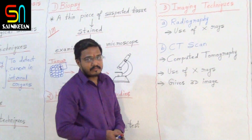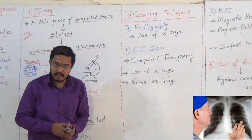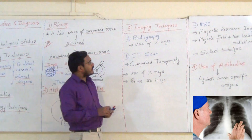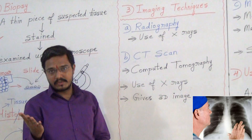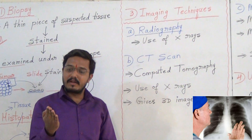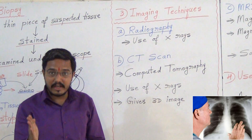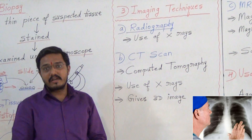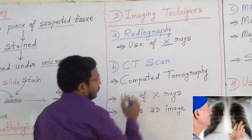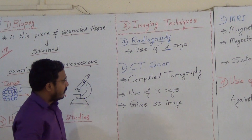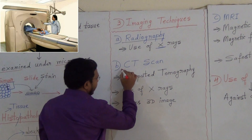Now come to the third one — imaging techniques. This is widely used nowadays. Imaging techniques are used to detect the cancer of internal organs. The first imaging technique is radiography. Radiography means X-ray. So in radiography, X-rays are used. After that, one more advanced technique came — that is called CT scan.